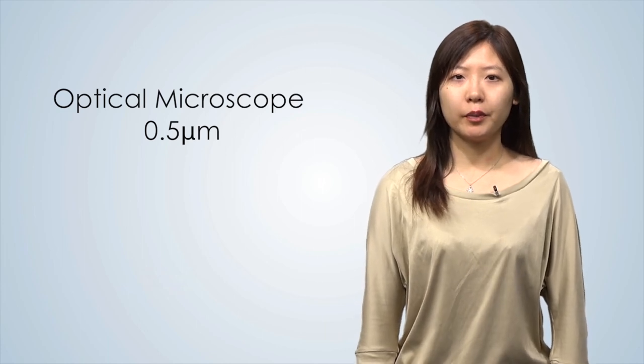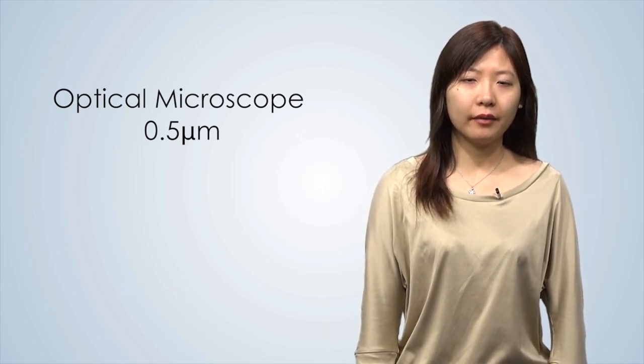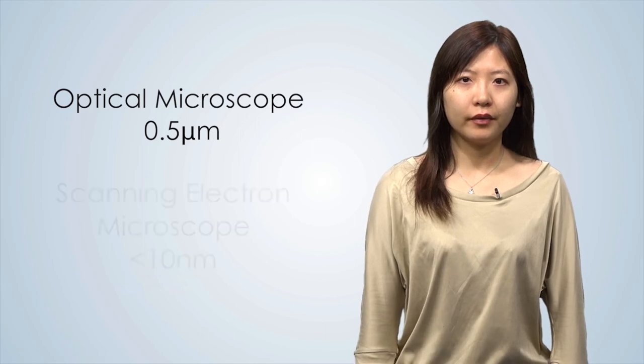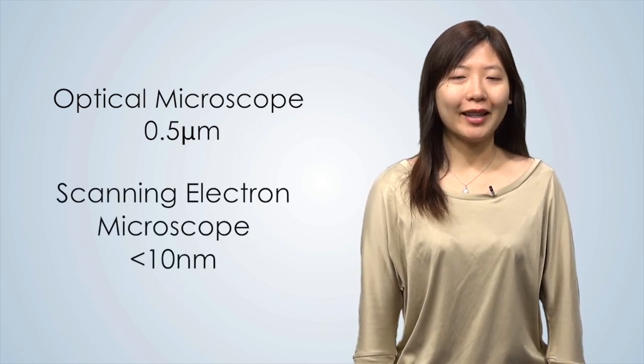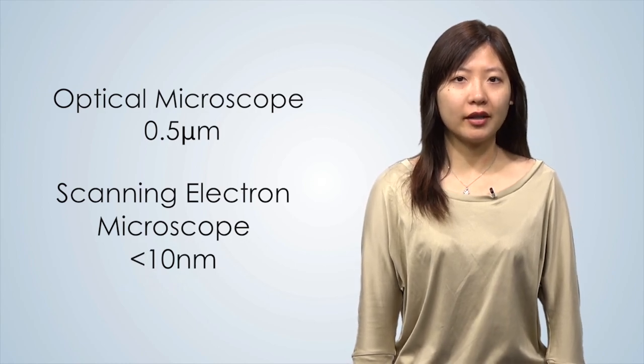But some of the features we patterned are smaller than that. We'll need a different way to image. Luckily, we have a scanning electron microscope that can image objects down to a few nanometers in size.